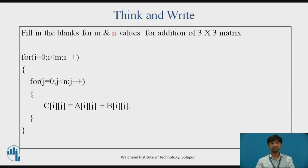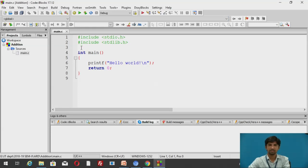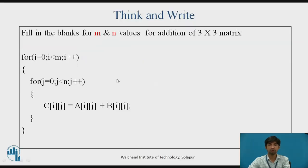For estimating the addition of a 3×3 matrix, recall from the last lecture that the starting base index begins from 0 and ends with the last index — that is array size minus 1. Here array size is 3×3, meaning indices go from 0 to 2. So the loop condition should be i less than 3. This loop will calculate the addition up to i equal to 0, 1, 2. Therefore, the answer for M and N values will both be 3. Now we will demonstrate a simple program for addition of a 2×2 matrix.